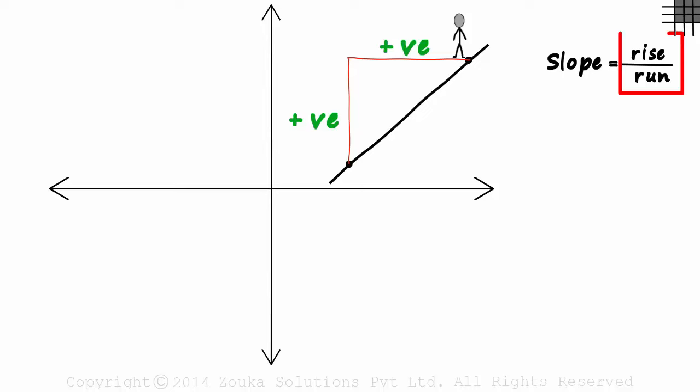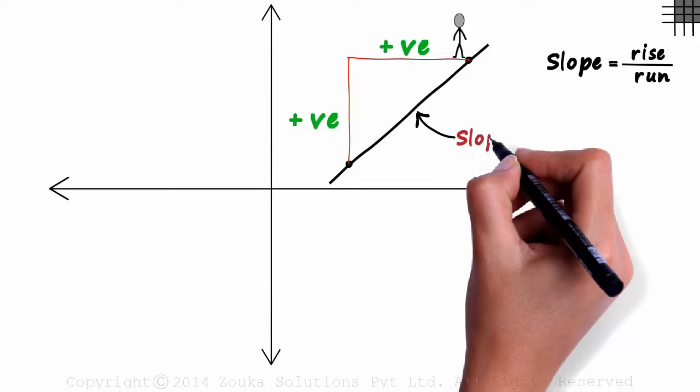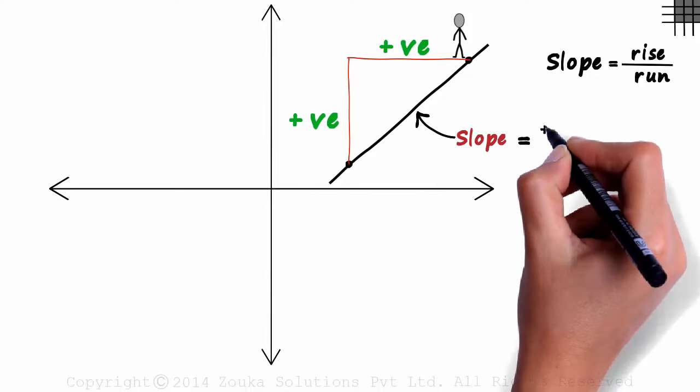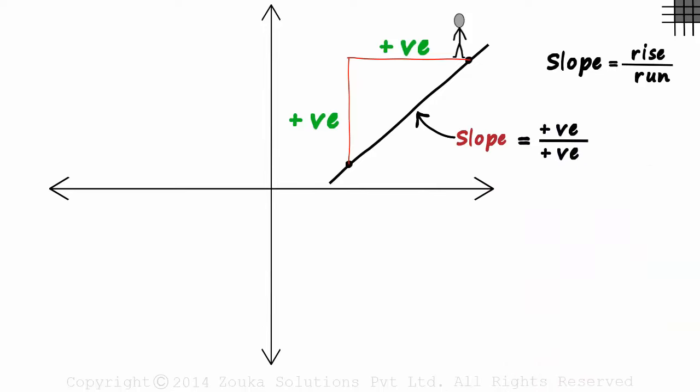Here, the rise as well as the run are positive. So the slope will be a ratio of two positive numbers. Positive over positive will give us a positive number. This line we can say has a positive slope.